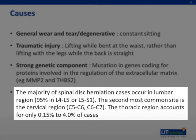Disc herniation can occur at any level of the spine. However, most happen in parts with increased mobility. The most commonly affected region is the lumbar region, followed by the cervical region, and then the thoracic region.